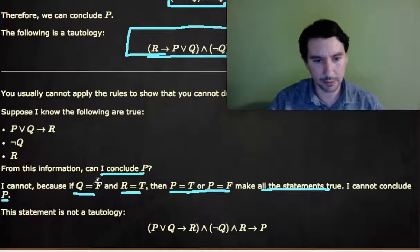Let's look at this in a little bit more detail. If Q is false, then not Q is true, so that makes that true. R is true, so that makes that true.